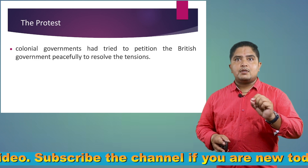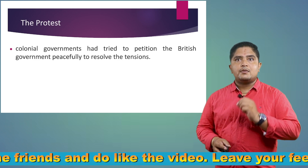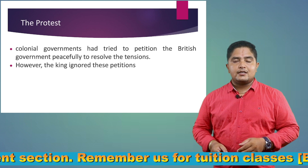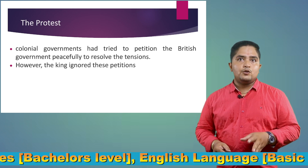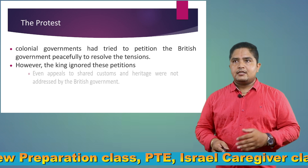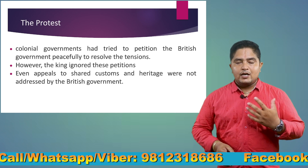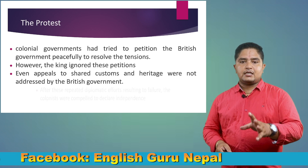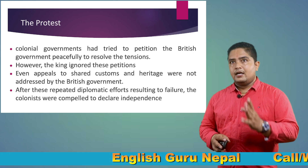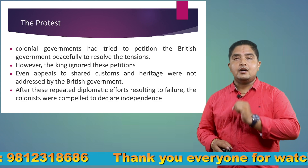There was a call for petition — attempts to resolve matters through diplomacy and appeals to the British government. Peacefully, they tried to negotiate. However, the King was completely indifferent to the demands of the American people. He was not willing to sign the petition. All appeals regarding shared customs and heritage were ignored by the King. Despite every diplomatic effort, the King did not listen to anything. Therefore, the Americans decided: now we ourselves have to declare independence — no one else will give us freedom.